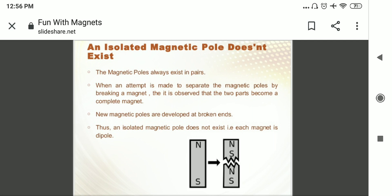And like you can see in the picture, if one end was a north pole, then automatically the second pole or the other end becomes a south pole.